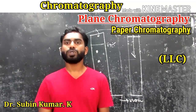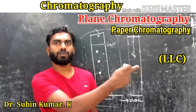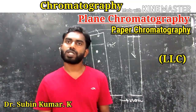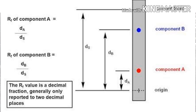The RF value can be calculated using the following expression: RF value equals the distance traveled by the component from the baseline divided by the distance traveled by the solvent from the baseline. For example, this gives the distance traveled by component A, component B, and component C respectively. Since the solvent moves faster than the compounds, the RF value of a substance will always be less than 1.